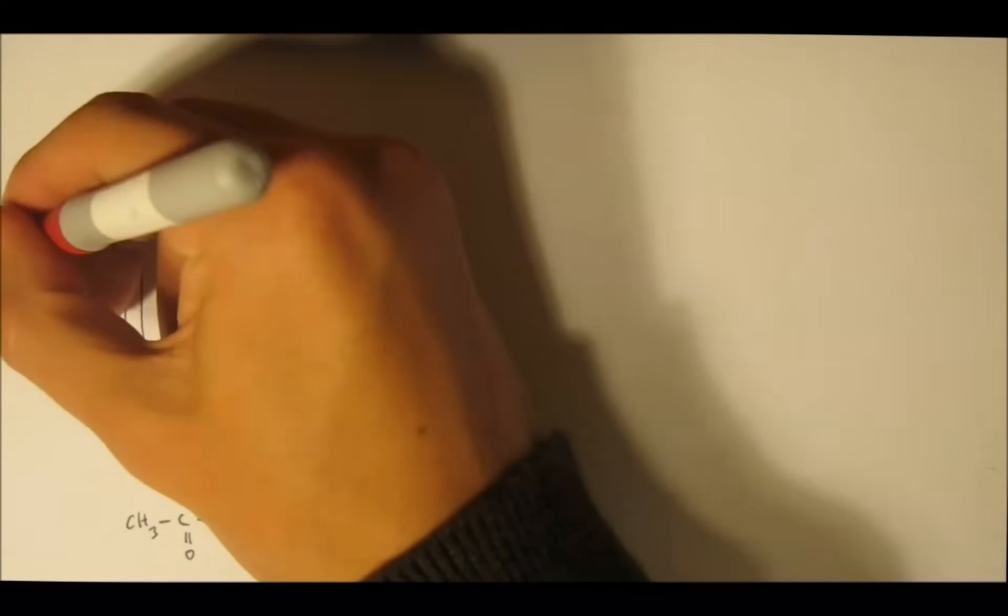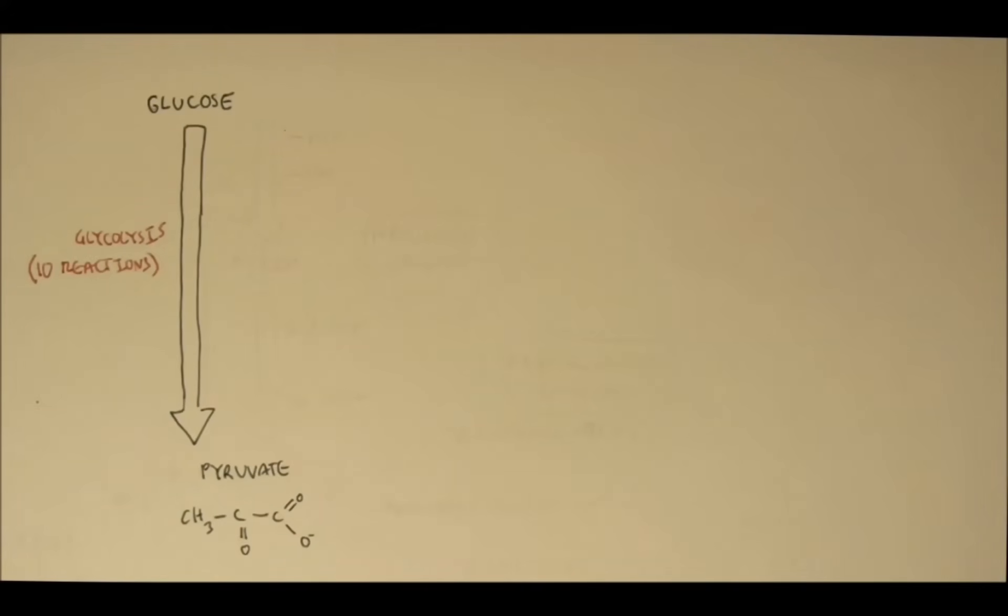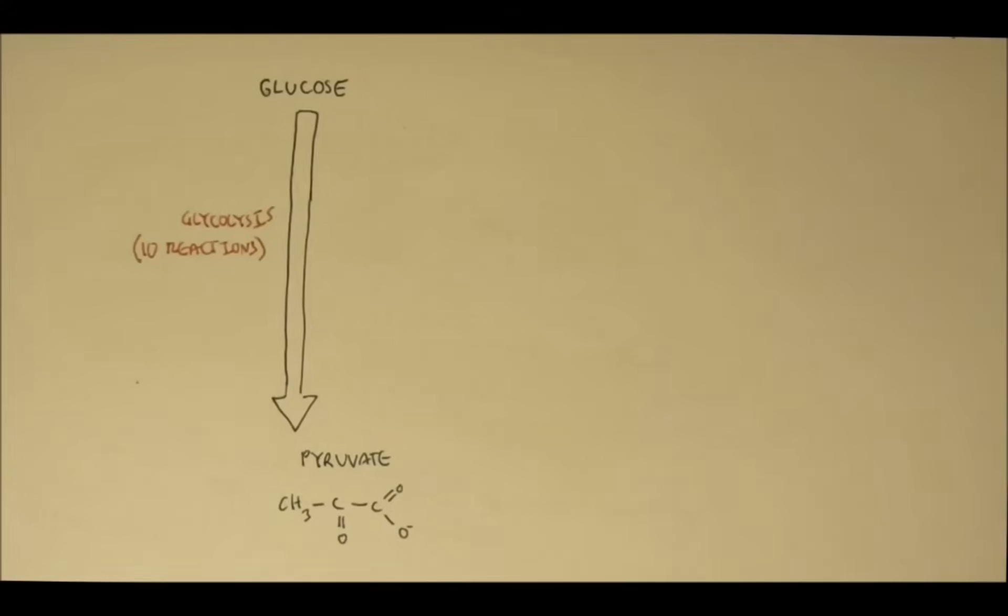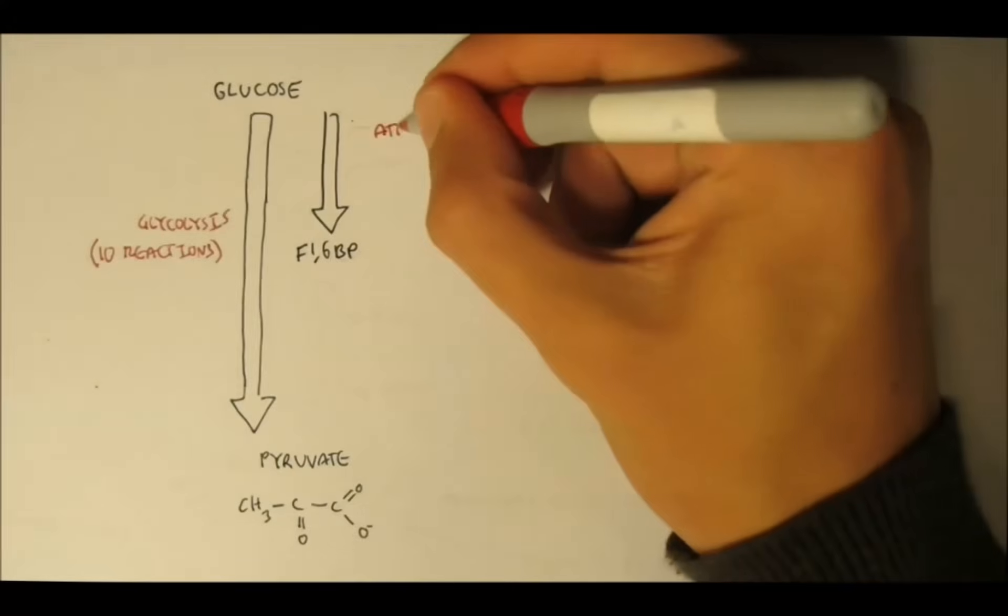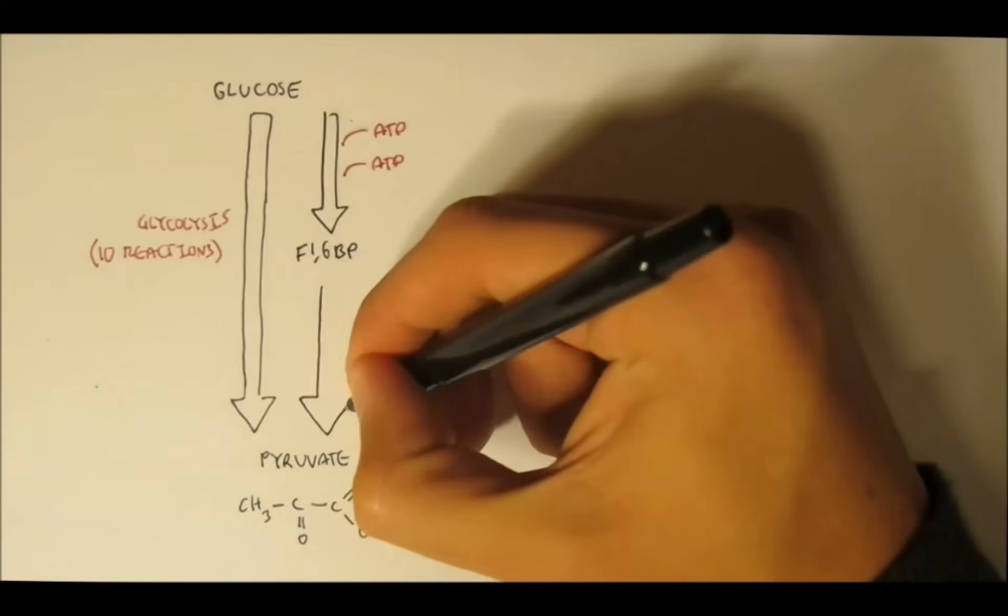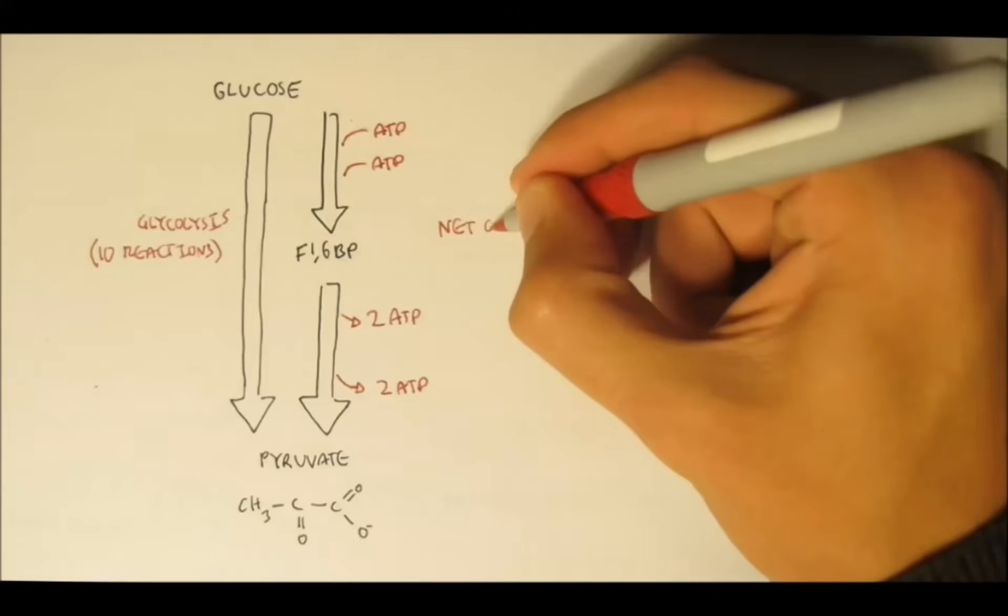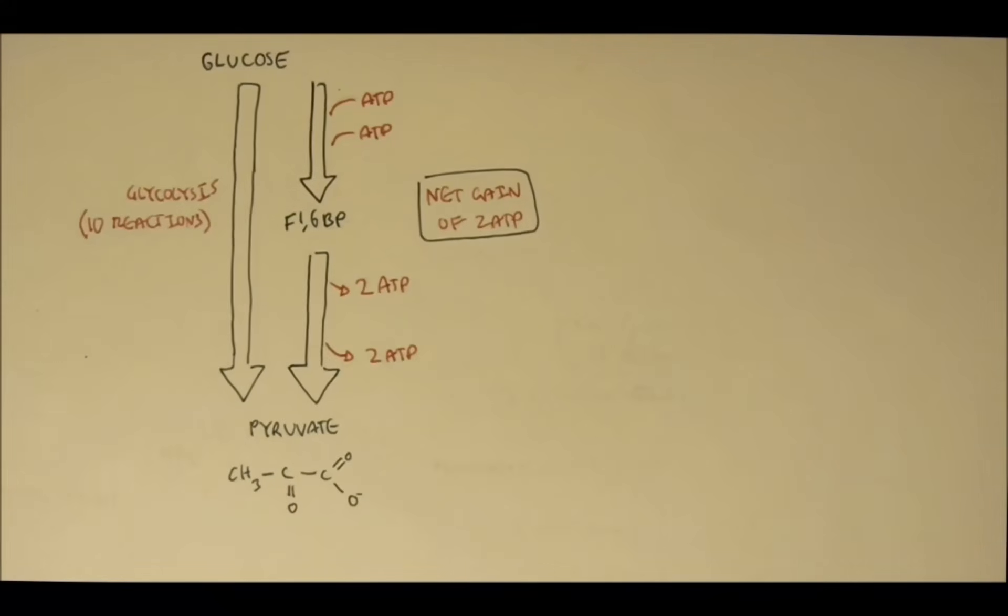Now, glycolysis is a 10-reaction process to provide quick energy in the forms of ATP. So glycolysis is to provide quick energy, such as when running or sprinting. Remember that 2 ATP was invested or used until fructose-1,6-bisphosphate. Then, from 2 glyceraldehyde-3-phosphates, 4 ATP was produced in total, giving a net of 2 ATP. Again, net gain of 2 ATP.